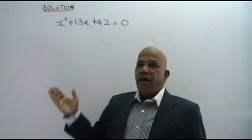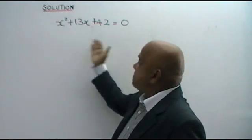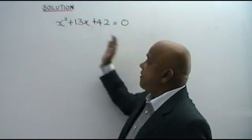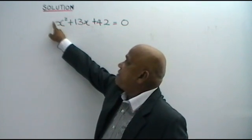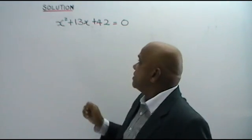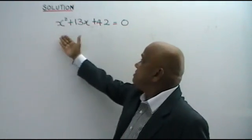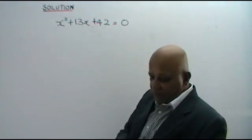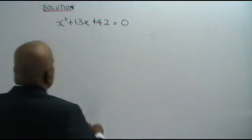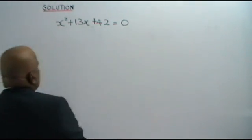What we have here is Part 1, the simplest form of the quadratic equation where the coefficient of x squared is 1. Let's see how we solve this — we have to find the values of x. So, x squared plus 13x plus 42 equals 0.